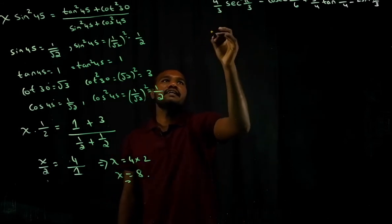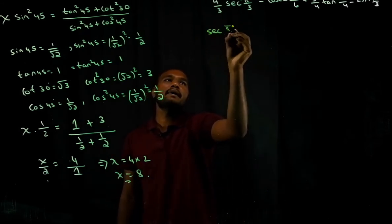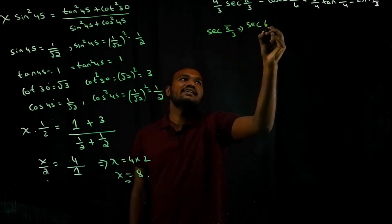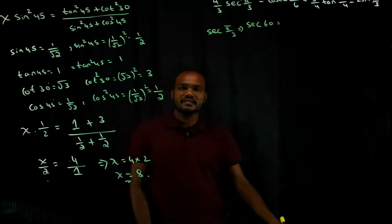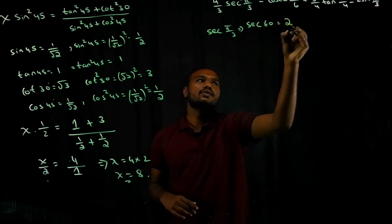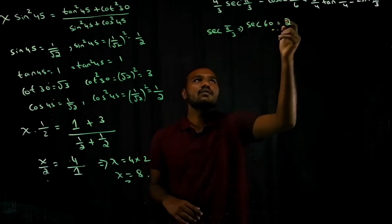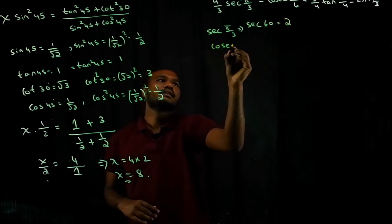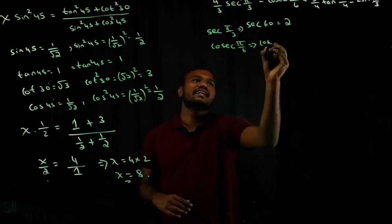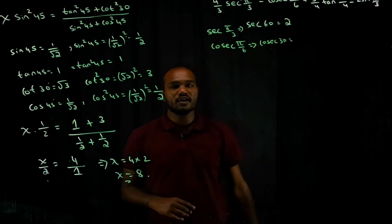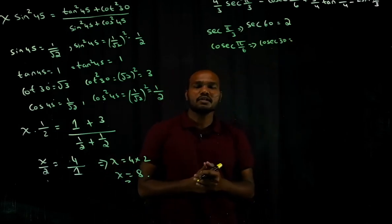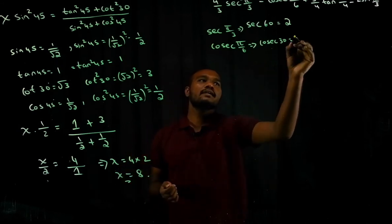Now we have to find sec(π/3). Secant π/3 means sec 60°. cos 60° is 1/2, so reversing it gives 2. Next, cosec(π/6) means cosec 30°. Since sine 30° = 1/2, cosecant 30° = 2.